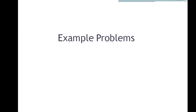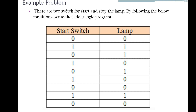In this session we are going to see one example problem. There are two switches for start and stop of a lamp following certain conditions. We are having two inputs and one output. When the start switch is 0, lamp is 0. When the start switch is 1, lamp should turn on. When the start switch is 0 again, lamp should remain on.